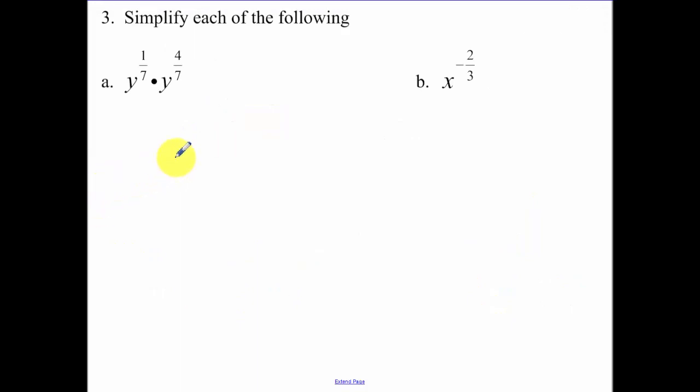Next example. Simplify each. Students sometimes struggle with this, but all you need to remember is it's the same thing we've been doing. Just now I have fractions for my exponents. So I have the same base. When I have that same base, what do I do? The exponents. We add those exponents. So same base, add the exponents. 1/7 plus 4/7 is 5/7.